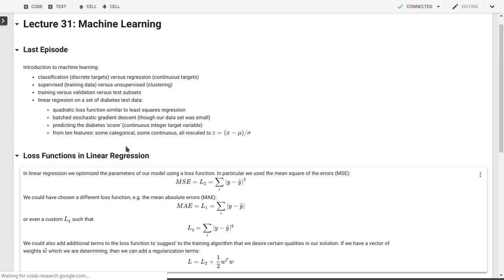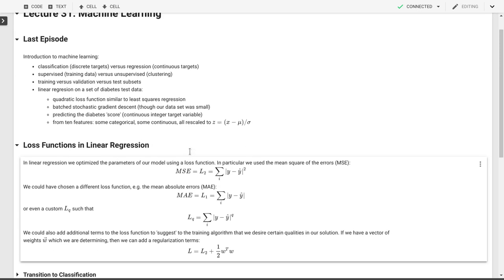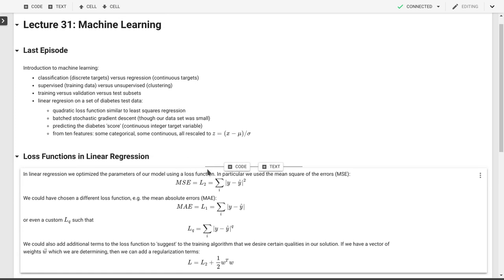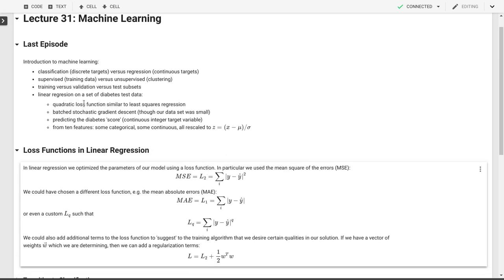So let me first talk a little bit about these loss functions. In this linear regression model we've used this quadratic loss function. So essentially the mean square of the errors. So the mean value of the square of the errors that we make in our predictions where predicted value y hat is different from the actual value y which we know in supervised learning because that's part of our training data set.